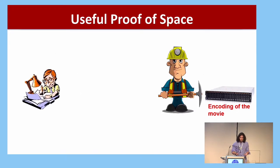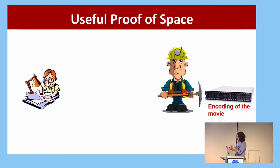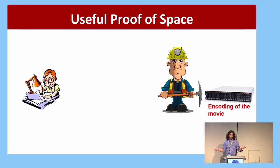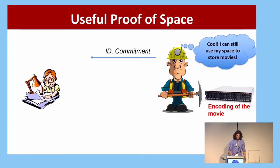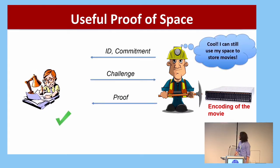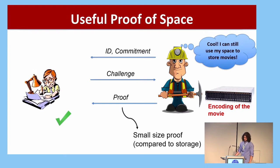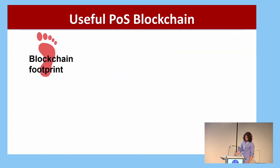What is a useful proof of space? It's a proof of space with an additional correctness requirement: the prover is able to use its storage to store files of its own interest, so it doesn't have to waste the space while engaging in the proof of space protocol — you can still use your space to store your movies. What is an application?